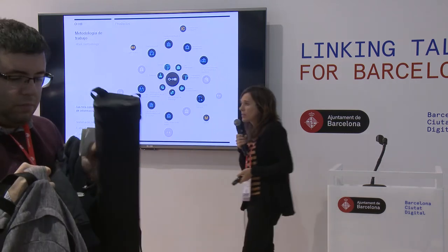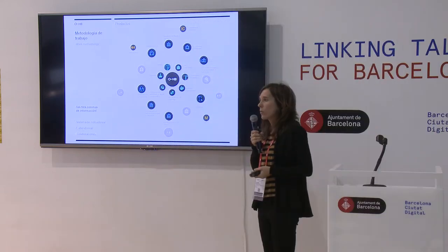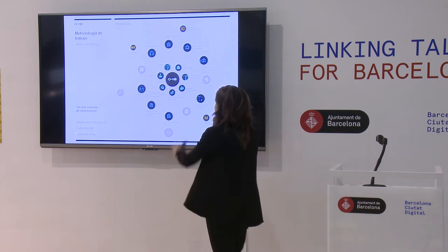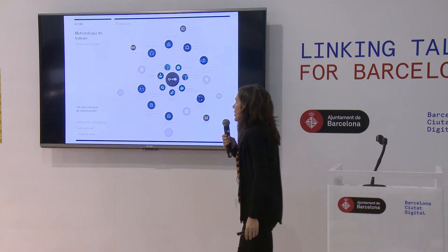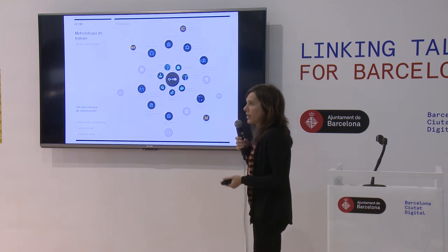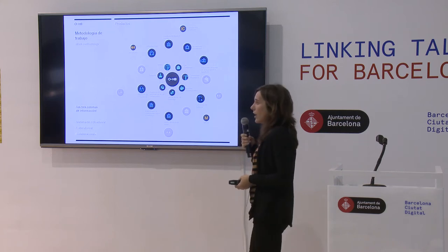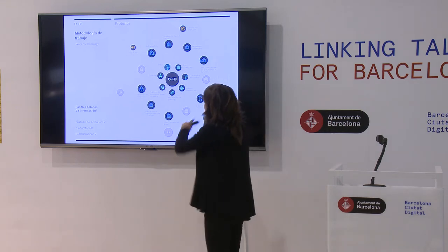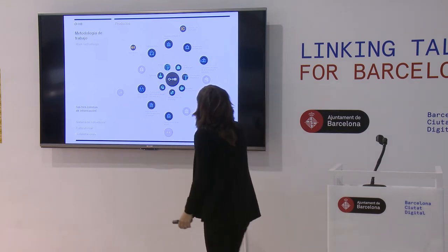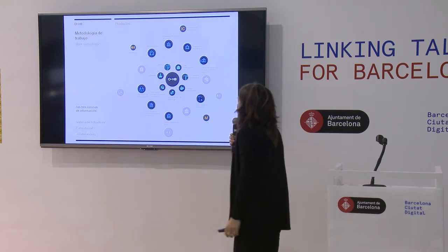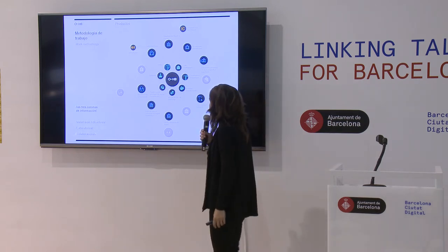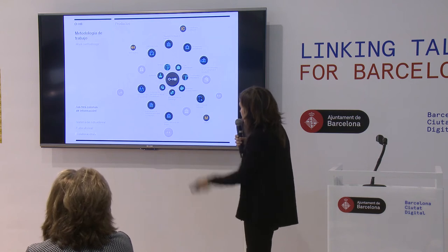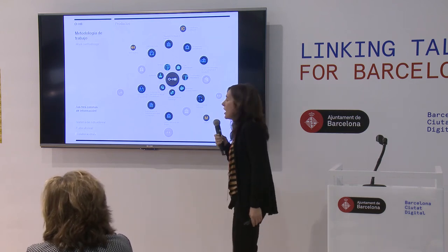That is our methodology of work, our contents, and the different products we are working on, with different rings of information. The basic one is the indicator system — it's where all the different indicators we are designing and creating sit. There are different thematics covering housing, construction, the market, socioeconomic data, the different problematics around accessibility to housing, and the policies.